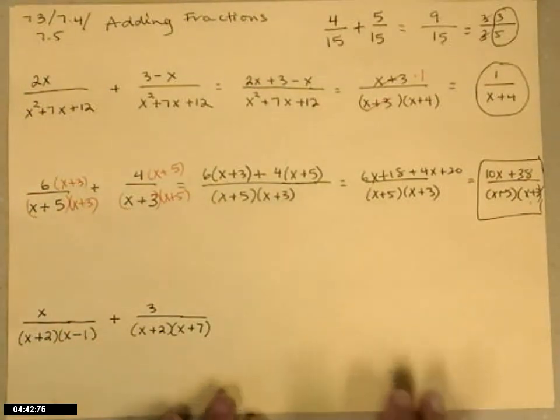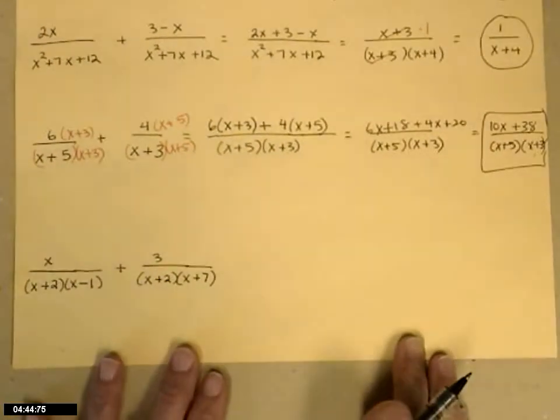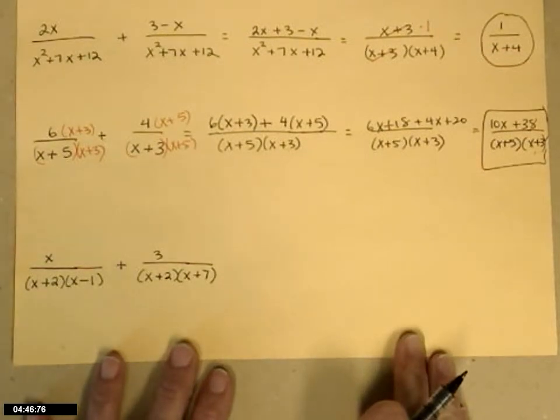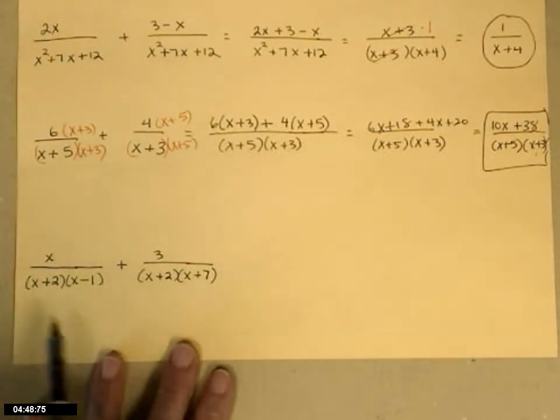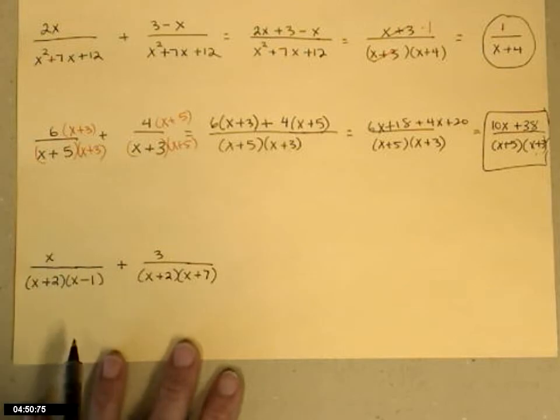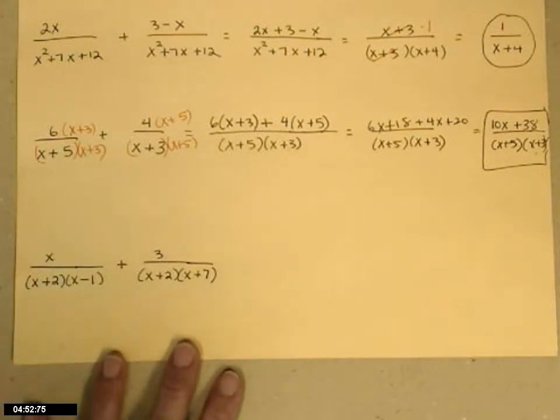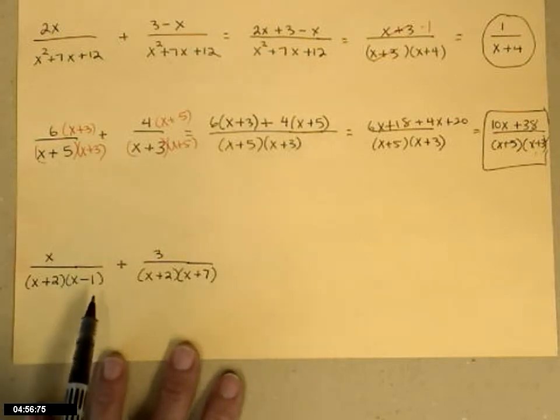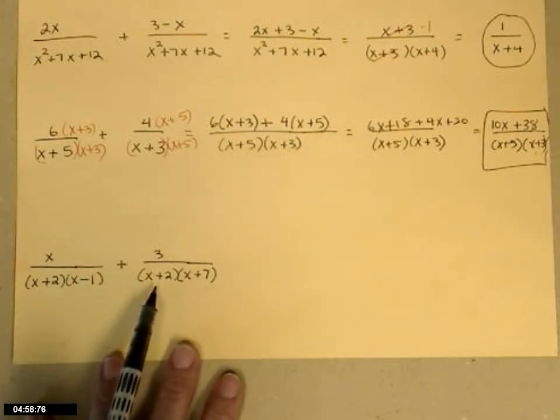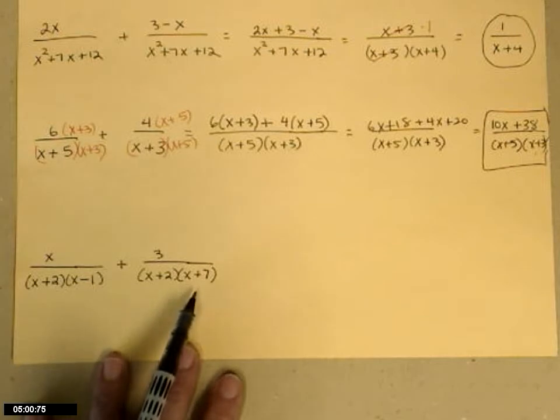All right, the last example, the most challenging. The challenging part is just finding the lowest common denominator. I started by writing in factored form, so we don't have to do that much factoring to start with. The denominator of the first is x plus 2 times x minus 1. The denominator of the second is x plus 2 times x plus 7.